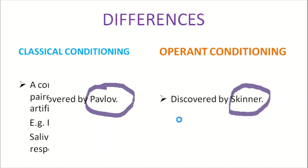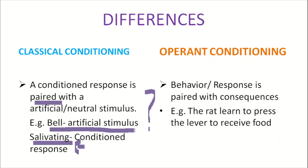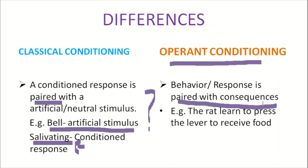One difference between these two theories is what is paired. In classical conditioning, a conditioned response is paired with an artificial or neutral stimulus. As we have seen in Pavlov's experiment, the hungry dog associated the bell with food, so whenever it heard the bell the dog started salivating. The conditioned response is salivating, and the bell is the neutral or artificial stimulus.